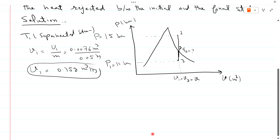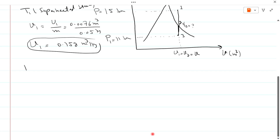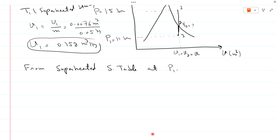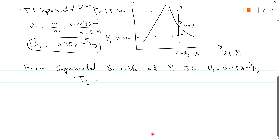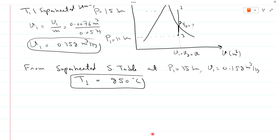Now we can easily find the superheated temperature T1. From the superheated steam table at pressure equal to 15 bar and specific volume V1 equal to 0.152 cubic meters per kg, T1 is equal to 250 degrees centigrade.